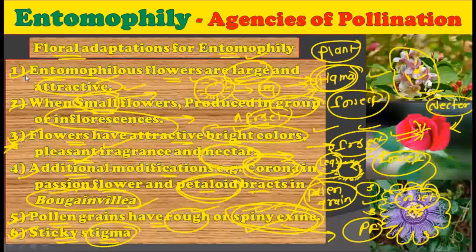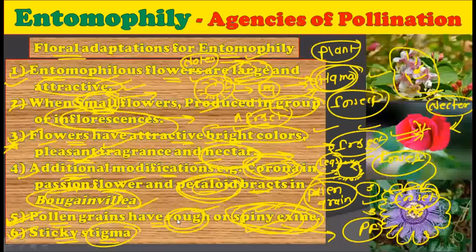So all six adaptations found in entomophilous plants are: first, flowers are large and attractive; second, if flowers are small they are produced in an inflorescence or group; third, flowers have attractive bright colors, pleasant fragrance, and nectar; fourth, additional modifications such as corona in passion flower and petaloid bracts in bougainvillea; fifth, pollen grains have rugose and spiny exine; sixth, the stigma is sticky in nature.